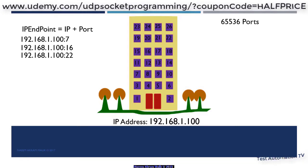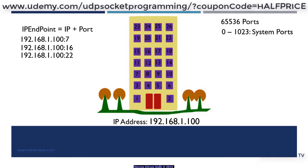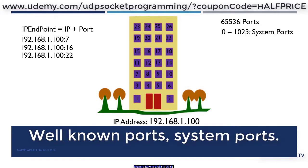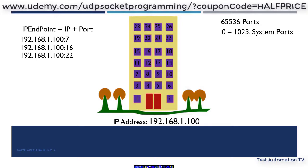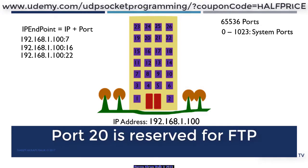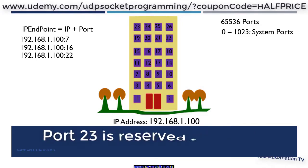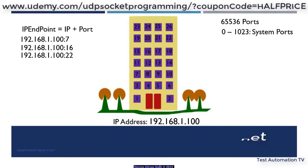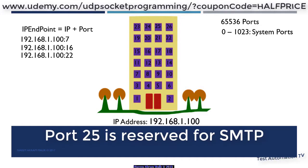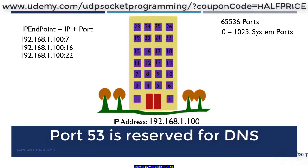There are a total of 65,536 ports on a computer. The port numbers from 0 to 1023 are reserved for operating system usage — these are also called well-known ports or system ports. A few examples: port 20 is used for FTP, port 23 for Telnet, port 25 for email using SMTP, and port 53 for DNS.